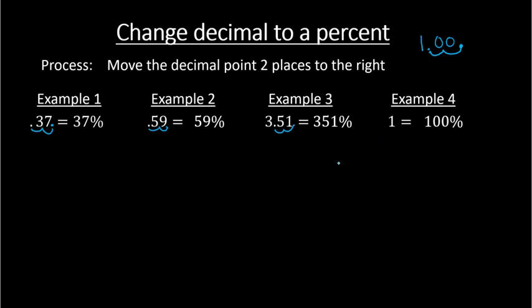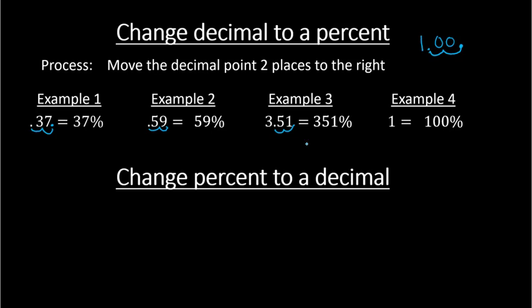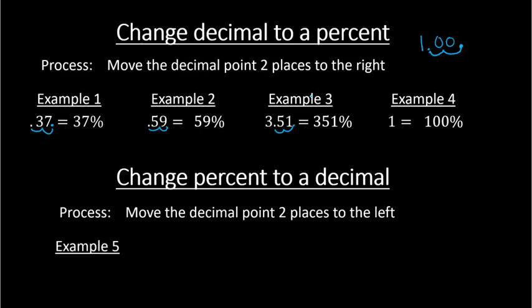Now, what about going the other direction — from percent to a decimal? From decimal to percent, we move the decimal point two places to the right. To go the other way, we move the decimal point two places to the left. For example, if we had 48%, the decimal point is assumed to be after the 8. To convert back to a decimal, we move it two places to the left to get 0.48.